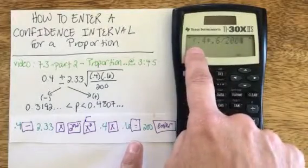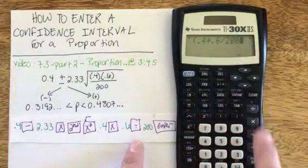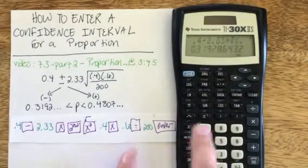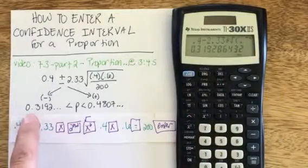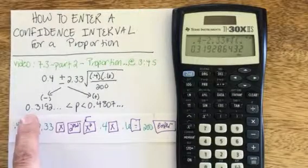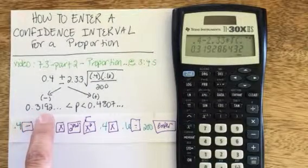And then even though the square root started with a parenthesis, I don't need an end parenthesis. I can just hit enter and I get the lower bound confidence value of 0.319, etc.